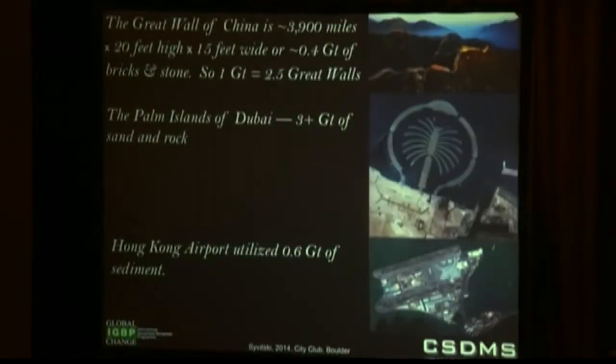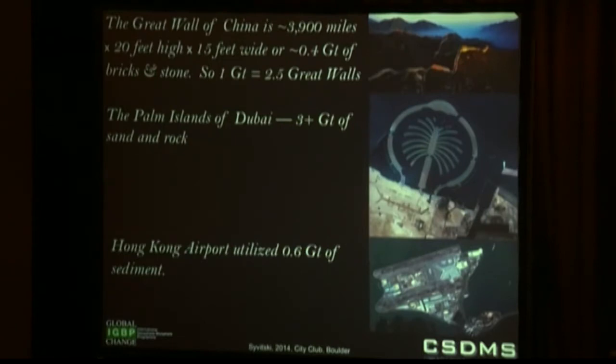In some of my talk I use the term gigatons, and not everyone knows what a gigaton is. If you multiply the thousands of kilometers of the Great Wall of China by its height and width, you get around 0.4 gigatons. So one gigaton of material is about 2.5 Great Walls of China. When I say a gigaton, you multiply by 2.5 and you get the number of Great Walls.